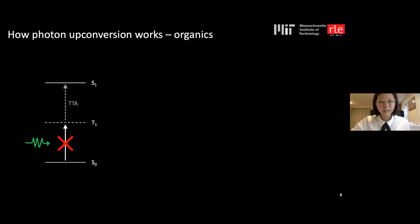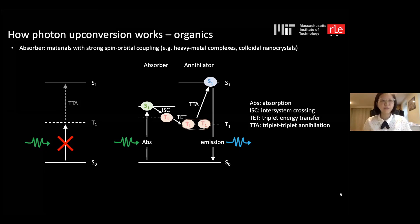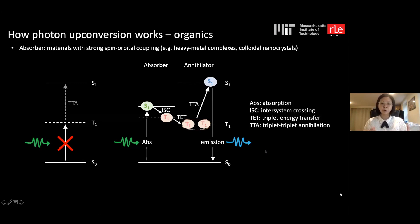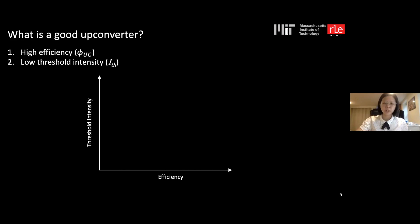To get triplets into the system, we use special materials with strong spin-orbit coupling — such as heavy metal complexes or colloidal nanocrystals — as the absorber. After the absorber generates triplets by absorbing light, these triplet excitons transfer to the annihilator material, which performs TTA and produces upconverted photons.